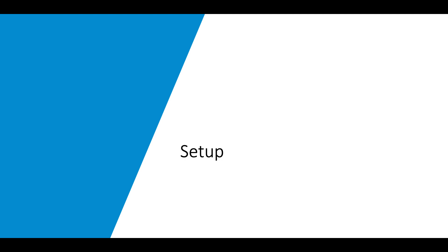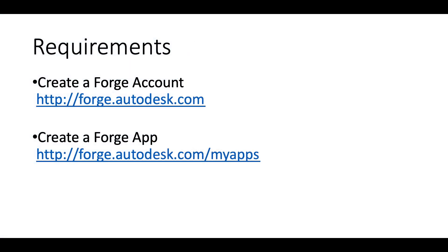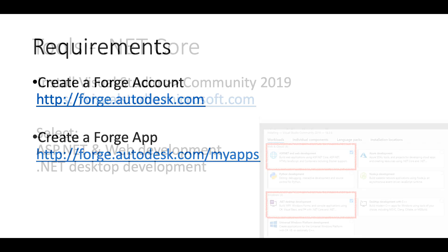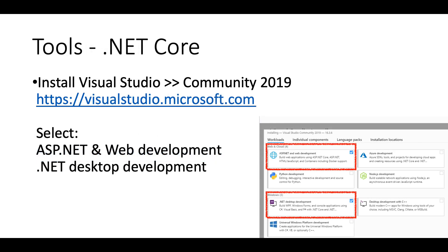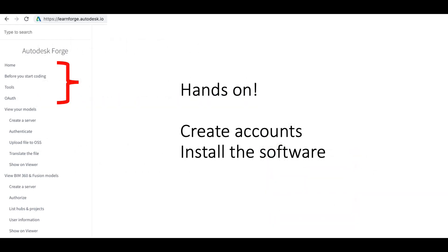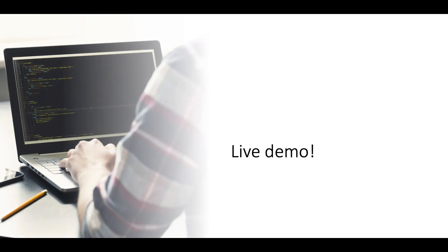Let's start with the basic setup. We need to create a Forge account and create a Forge application. We also need to install Visual Studio Community 2019 and select ASP.NET Web Development and .NET Desktop Development. So let's see that in action — we have to follow the create account and install the software steps. Let's see a live demo of that.